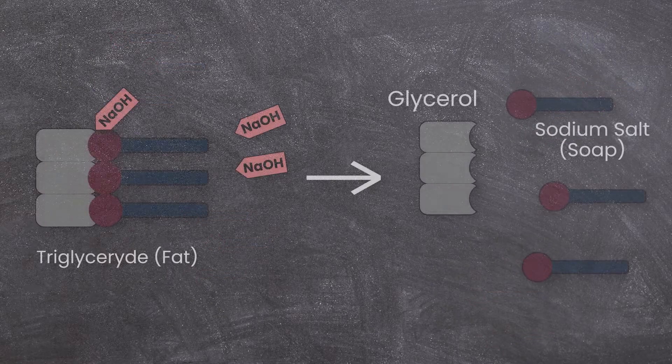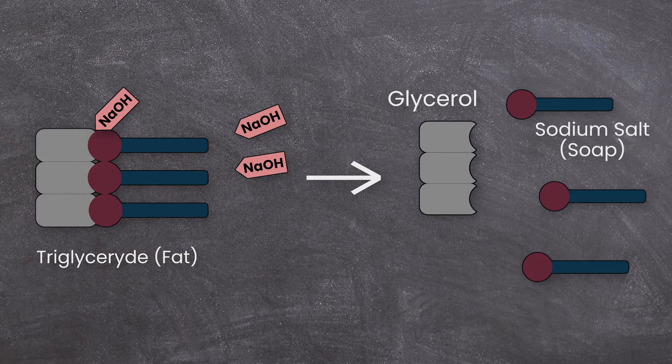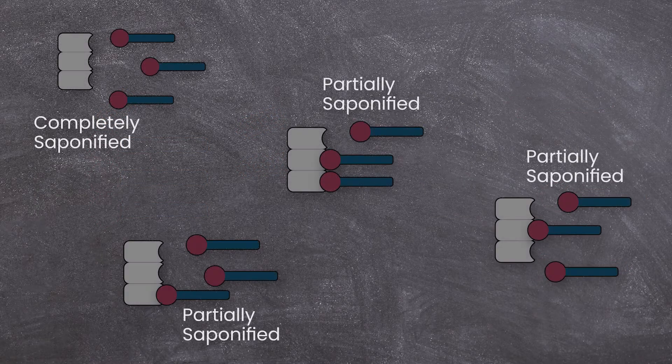To saponify one oil molecule, you need three molecules of sodium hydroxide. You have to remember that the saponification process can take up to 48 hours to complete. In this time, all the molecules clash together and form soap. When you use a lye discount, the chance is much higher that every oil molecule has reacted with at least one molecule of sodium hydroxide, than that there are oil molecules which didn't react with any sodium hydroxide at all.